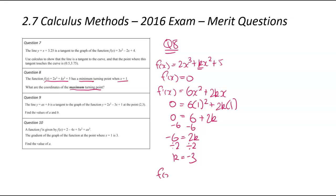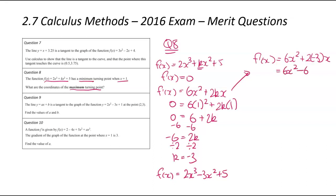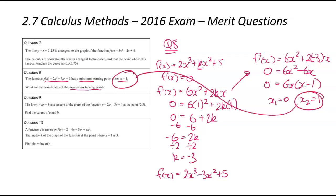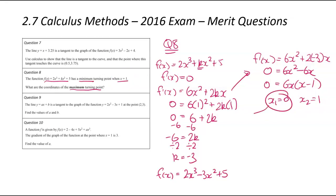Putting k equals negative 3 into our original equation: f(x) equals 2x cubed minus 3x squared plus 5. The gradient function becomes f'(x) equals 6x squared minus 6x. Setting that equal to zero and factorising: 6x(x minus 1), which gives x₁ equals 0 and x₂ equals 1. That matches the answer we were given — x equals 1 is the minimum — so x equals 0 will be the maximum.